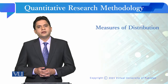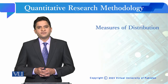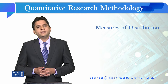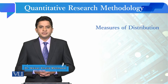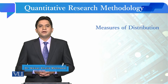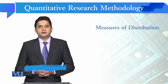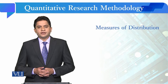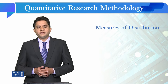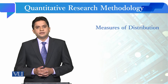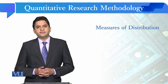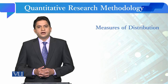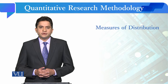Dear students, now we are going to see the Measures of Distribution. When we talked about Measures of Central Tendency and Measures of Dispersion, we discussed that data is normally distributed with reference that mean, median, and mode values are similar. And when we discussed dispersion, if the standard deviation value is not high, then we say that data is normally distributed.